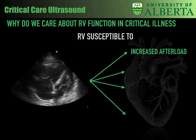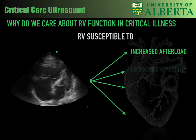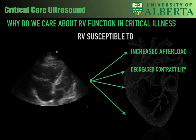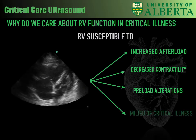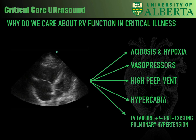So why do we care? The RV is susceptible to a host of problems: increased afterload, whether it's from the ventilator or from clot; decreased contractility, whether from sepsis or ischemia; preload alterations such as occur in distributive shock; and also the milieu of critical illness — things like acidosis and hypoxia. Vasopressors can also increase pulmonary afterload by leading to pulmonary vasoconstriction, high PEEP, and ventilator settings such as high plateau pressures. Importantly, PEEP may help overcome significant hypoxia, and hypoxia itself can obviously lead to RV dysfunction. Things like hypercarbia can lead to acidosis, and finally left ventricular failure and pre-existing pulmonary hypertension can also be competing problems.